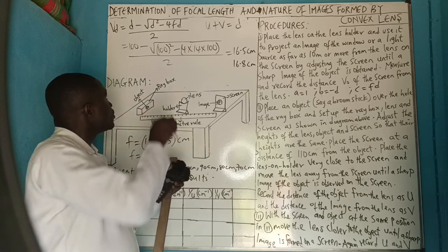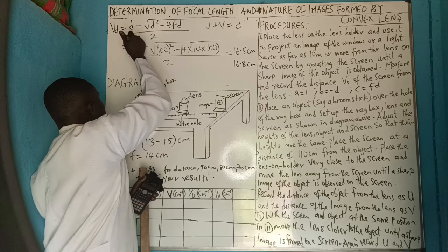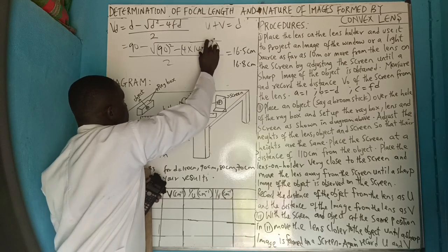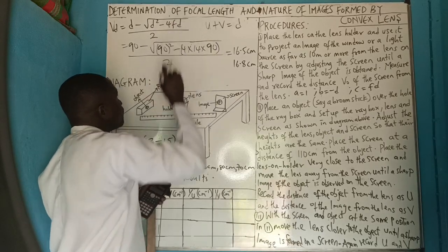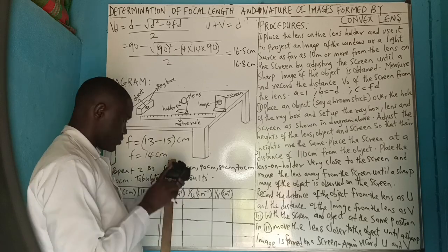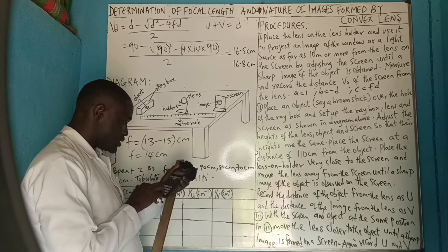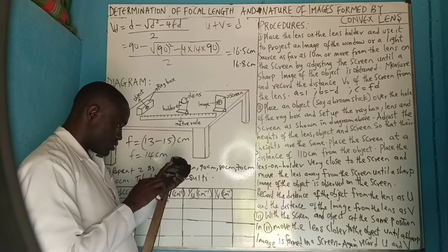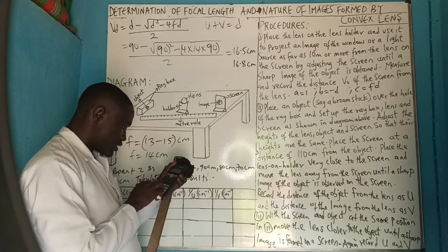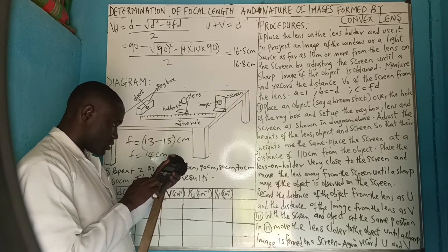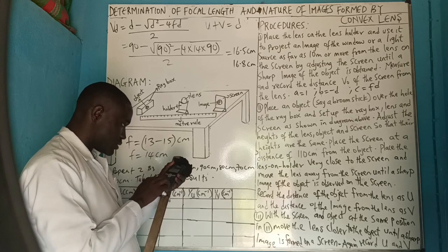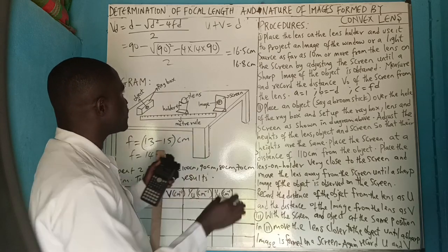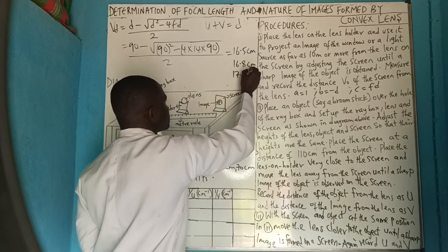We go again and change d to 90. We calculate: v = (90 - √(90² - 4·14·90)) / 2. That is: 90 minus square root of (90² minus 4 times 14 times 90), divided by 2. That gives 17.3 cm. So v = 17.3 cm.